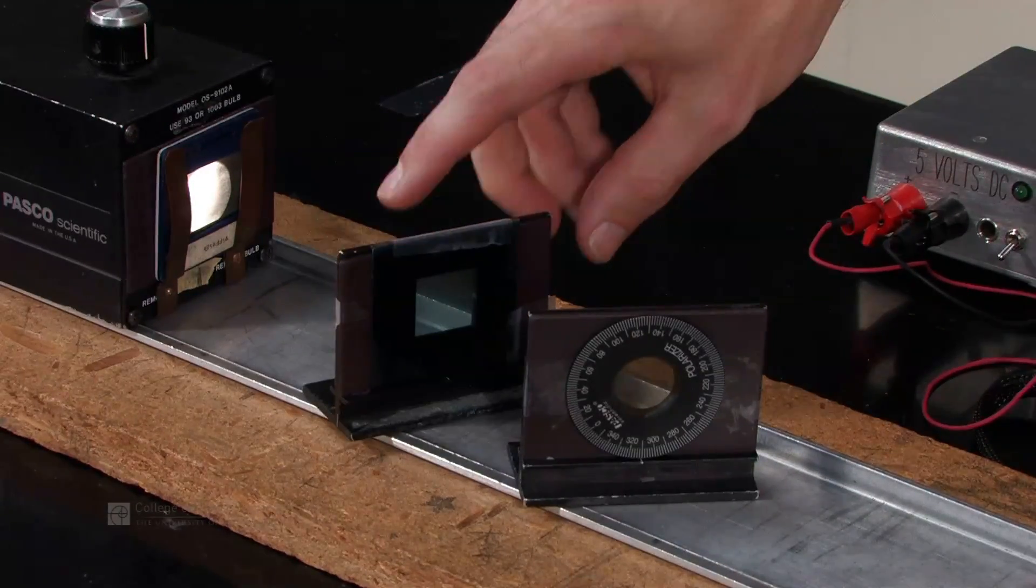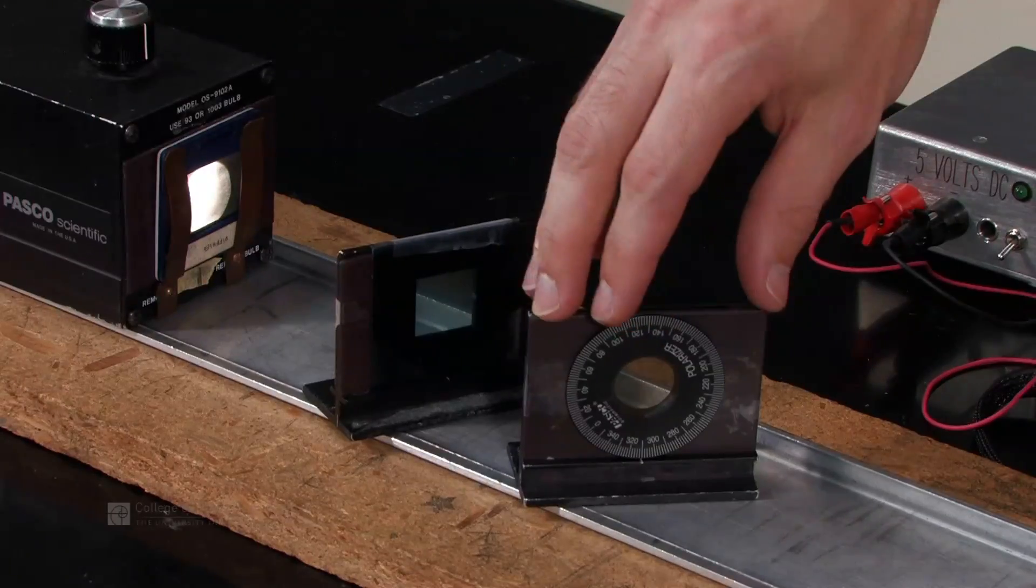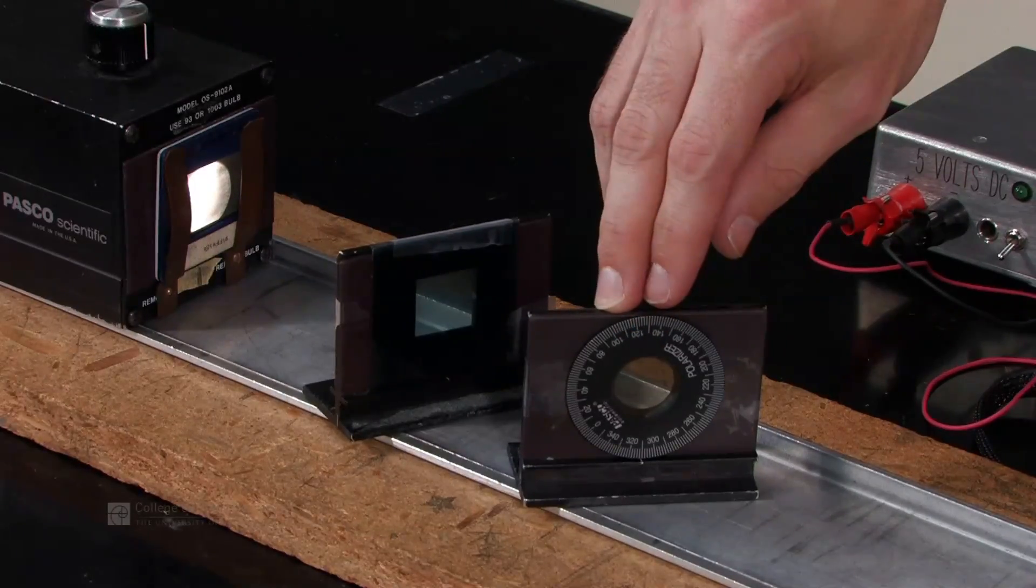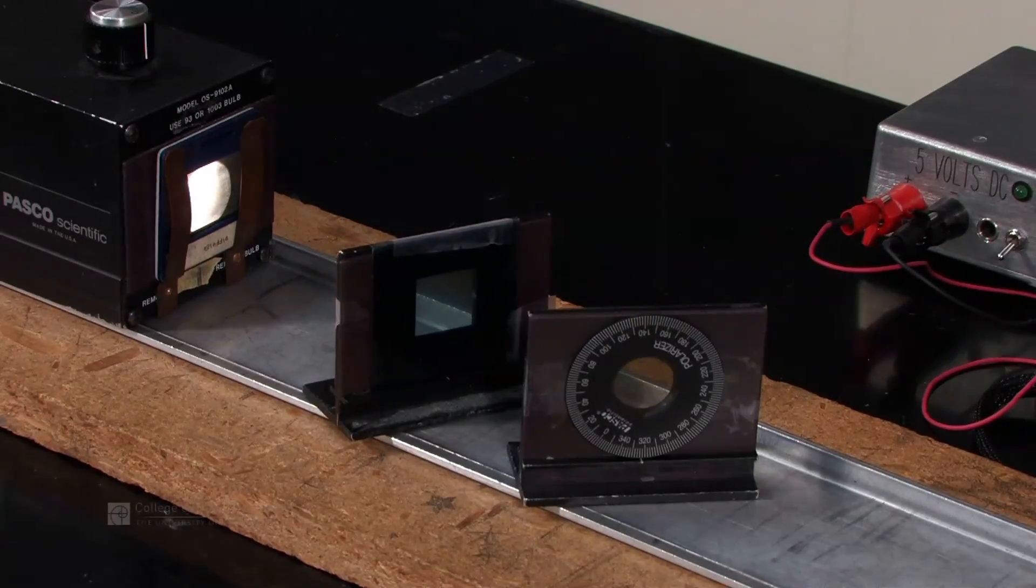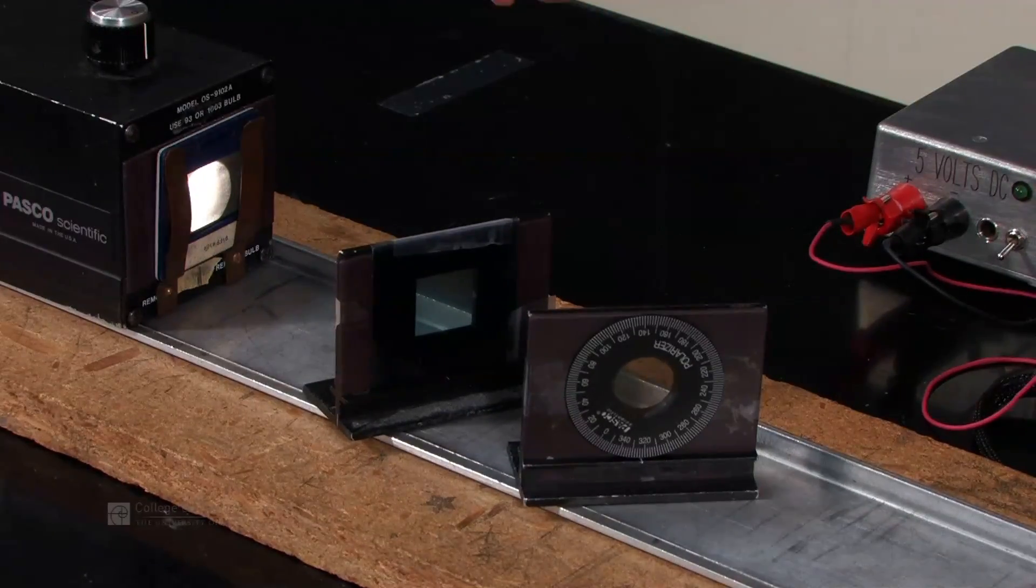The trick when we set this up: the numbers that the analyzer says are just relative angles. When we set it to, in this case, 320 degrees, we may be running at 320 degrees. It might actually be an absolute number of zero or something.